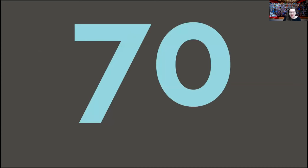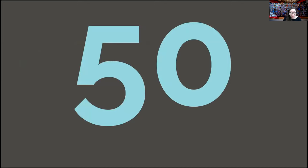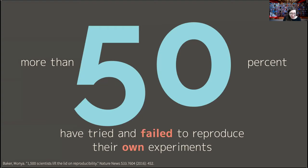More than 70% of scientists surveyed as part of a Nature News article — 1,500 scientists — said they have tried and failed to reproduce another scientist's experiments. Another striking number: more than 50% said they have tried and failed to reproduce their own experiments. When they say 'reproduce their experiments,' sometimes they're talking about exactly what we'll discuss today — computational reproducibility — but there are other domain-specific reasons as well.